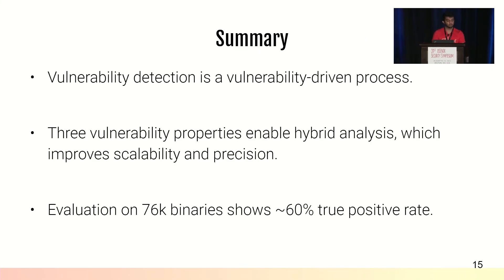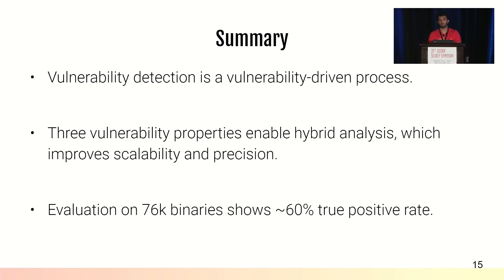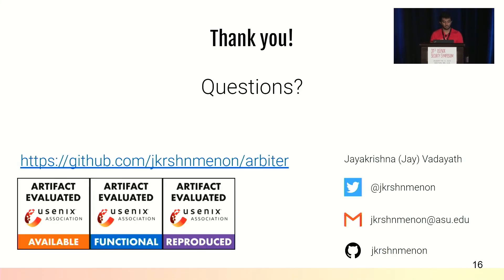To summarize, we identified a core property for vulnerability detection: it depends upon the type of vulnerability. Using this insight, we identified three properties enabling a hybrid analysis that improves scalability and precision. We evaluated our implementation on 76,000 x86-64 user-space binaries in the Ubuntu APT repositories, achieving close to 60% true positive rate, and found bugs that no other tool could find. Arbiter is available on GitHub and as Docker containers. I will take any questions now. Thank you.